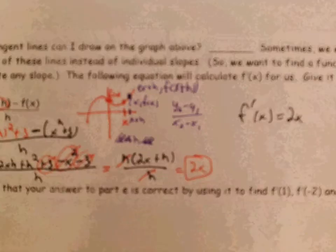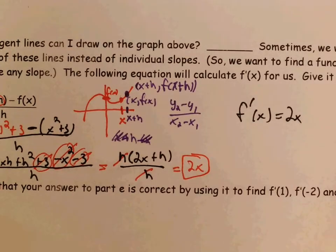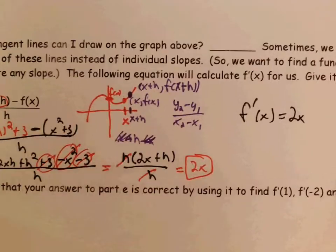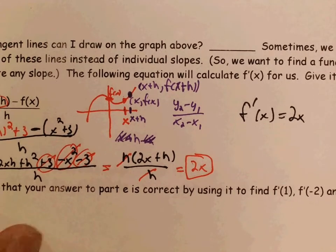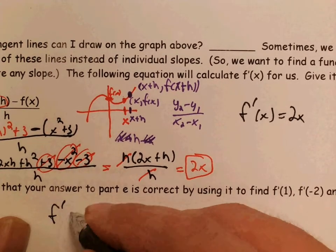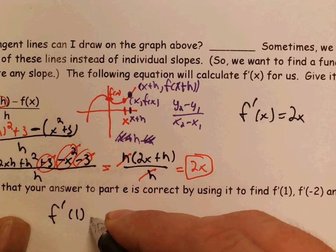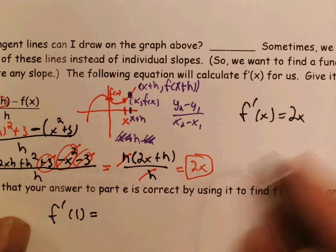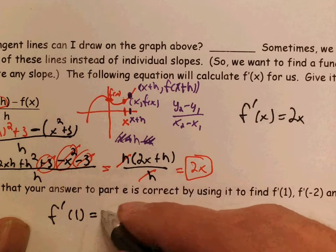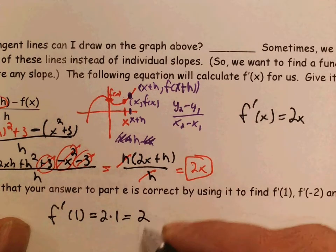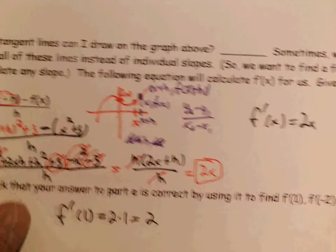And what this says is that the slopes of the tangent line are 2 times x for any x value. So, for instance, earlier we found that f prime of 1 was 2. Let's do it using our formula. f prime of 1 is going to equal, well, the formula right here says that f prime of any x is just 2 times that x. It's just 2 times 1, which is 2, which is what we got in part a.